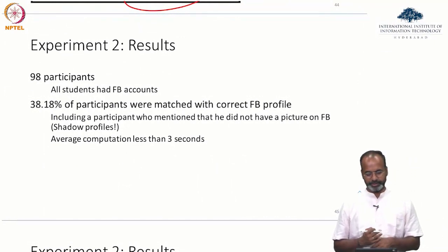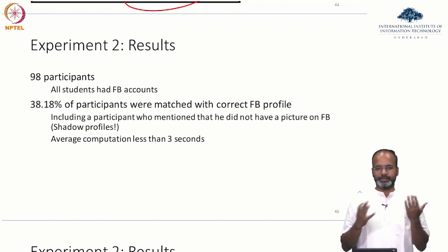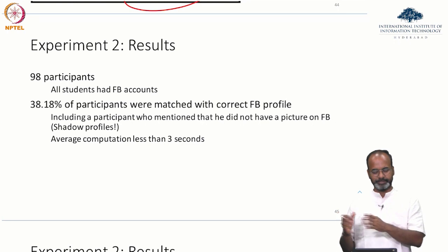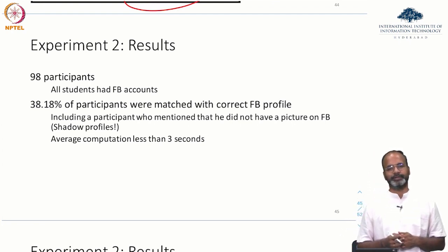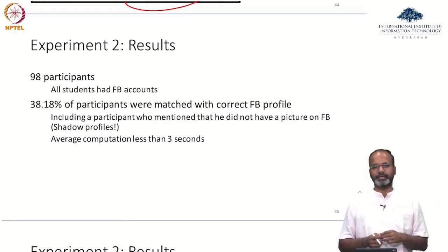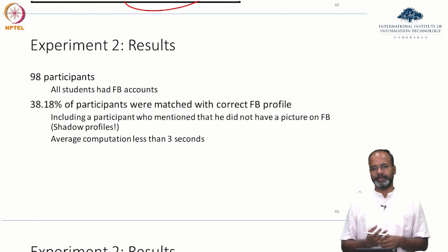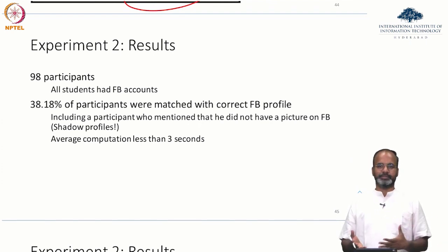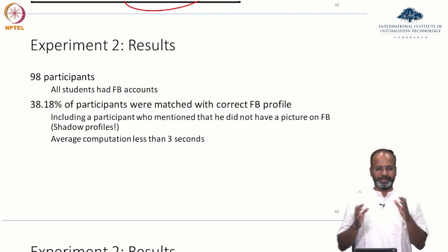98 participants, all students had Facebook accounts. 38 percent of the participants were matched with the correct Facebook profile — the correctness coming from the participant marking 'this is me' from the picture. This included a participant who mentioned that he did not have a picture on Facebook — that is the idea of shadow profiles. Social media platforms have information about users even when they are not on the platform. Some of you may not be on Instagram, but Instagram actually has information about you and would use that for recommendations — that idea is called a shadow profile.